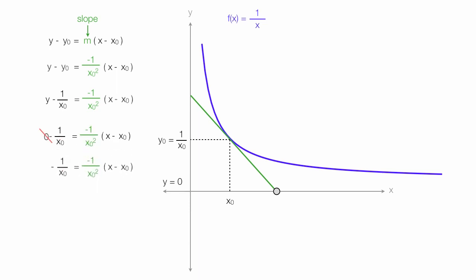Now I multiply both sides of the equation times x0 squared. Both sides. On the left-hand side, I can take that x0 squared and cancel it with the x0 on the denominator, so I'm left with negative x0. On the right-hand side, these two x0 squareds cancel each other out, so I'm left with negative 1 times x minus x0.